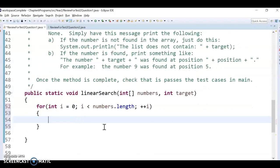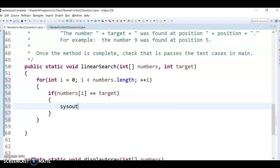Okay, and then I just want to see if it equals. So I want to see if numbers position i, if the number at the i-th position is equal equal to the target. Okay, then we found it, right? So I'm going to do a sysout print.